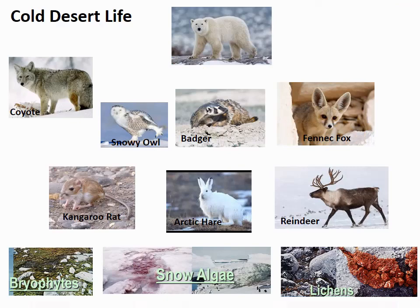In the cold desert food web, organized by trophic level, the main producers are bryophytes, algae, and lichens. These are eaten by reindeer, arctic hares, and kangaroo rats. These herbivores are preyed upon by snow owls.